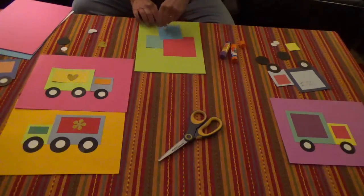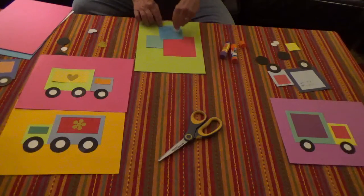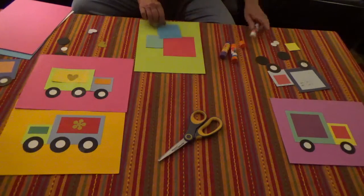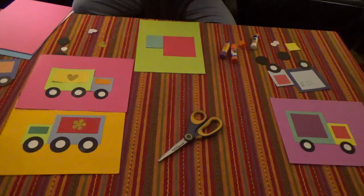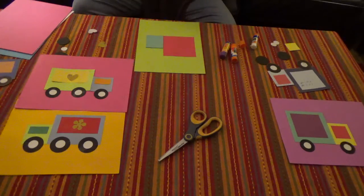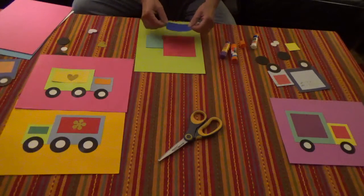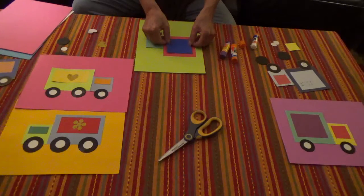From a square you can make a triangle if you fold it in half, but you can't do that with a rectangle. Okay.